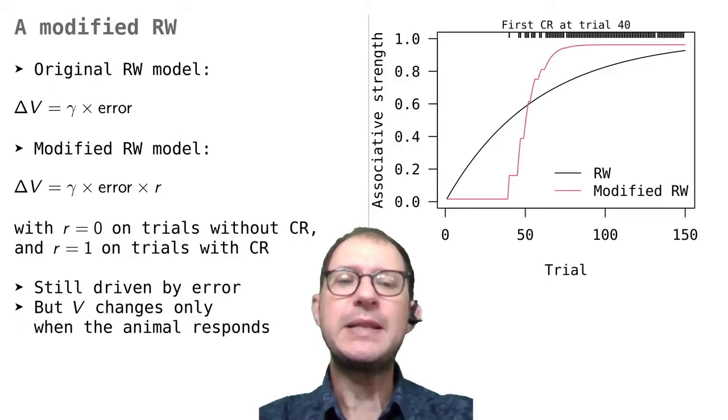We can see now what the puzzle is. After trial 40, the rabbit goes pretty quickly from not responding to responding almost every time. This means that the rabbit is learning quickly at this point. But if it is learning quickly, why did it wait until trial 40 to respond? The black line shows that RW predicts a large probability of responding, up to 40% for each trial, even before the rabbit starts responding, so when there are actually no responses.